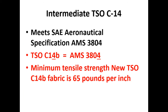Intermediate fabric is our next slightly less strong category. It is covered by TSO C14B and AMS 3804 — look for those fours and you'll think intermediate fabric. The minimum tensile strength for new TSO C14B intermediate fabric is 65 pounds per inch.